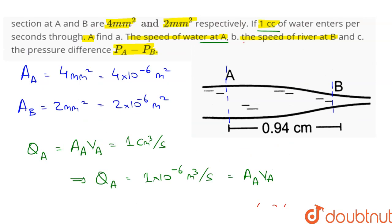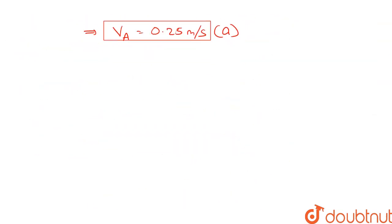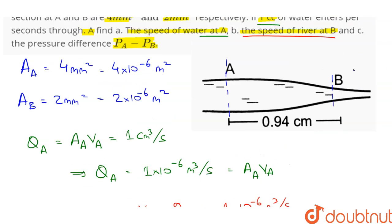In the second part, we need to find the speed of river at B. Now from the equation of continuity, we know that the mass flow rate through A is equal to the mass flow rate through B because mass can neither be created nor destroyed. Therefore, it is conserved.